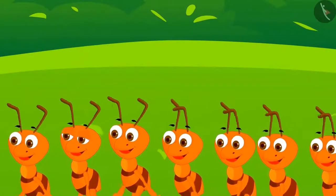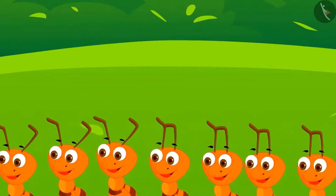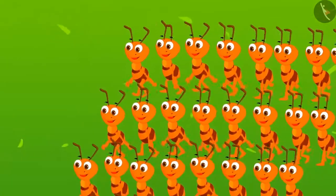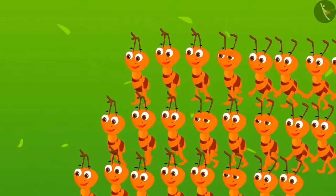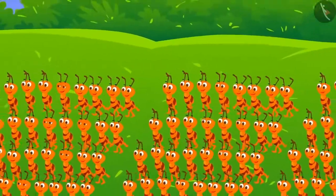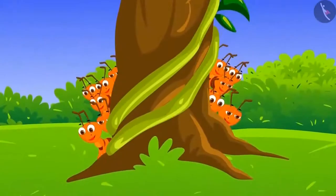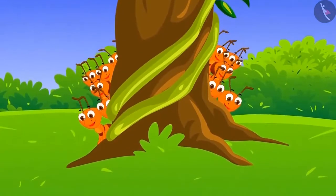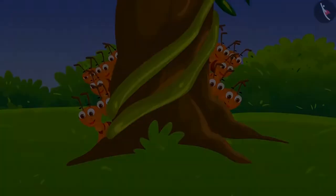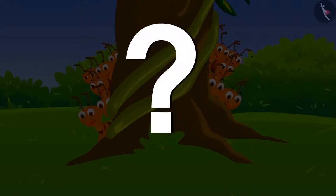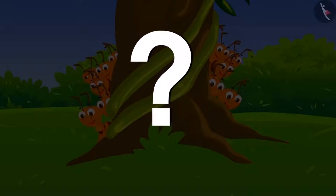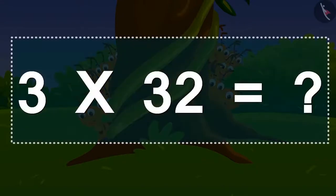Actually, this was a well-thought-out plan by the ants. They formed three groups, and each group had 32 ants. All the ants were hiding behind the tree. Can you tell how many ants were there in all? How do we write it in the form of multiplication? 3 times 32 is?